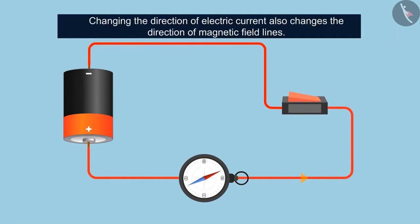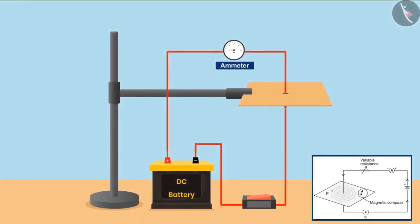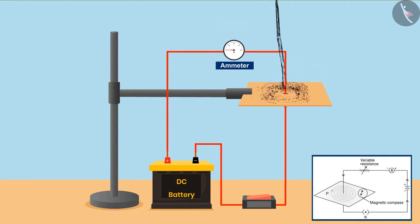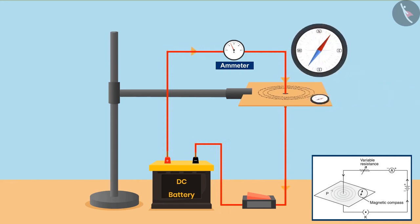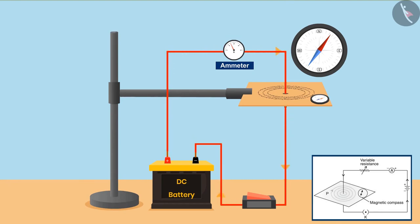To know the direction of the field lines, a change is made in the experiment. We keep the apparatus in a vertical direction, connect a resistor in series, and place a piece of cardboard around the copper wire with the help of a stand. Pouring iron filings on the cardboard and tapping it a few times reveals a circular pattern — these are the magnetic field lines. A compass placed on the cardboard shows their direction. It is proved that electric current possesses magnetic fields around the conductor. If we increase the electric current, the deflection and the strength of the magnetic field lines also increase.